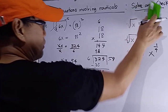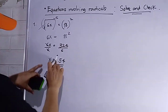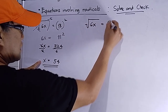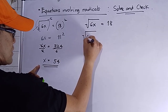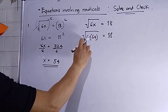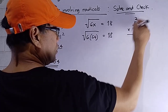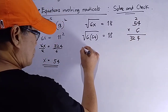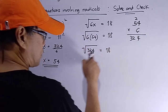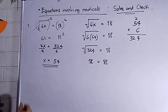Now let's check by plugging x = 54 into the original equation: square root of 6 times 54 equals 18. 6 times 54 is 324. The square root of 324 is 18, which equals 18. So x = 54 is correct.